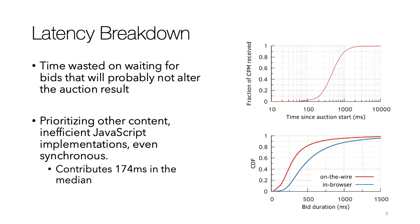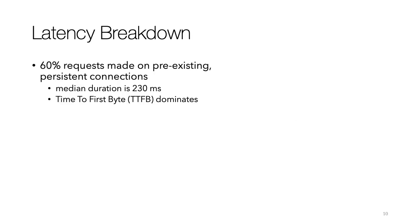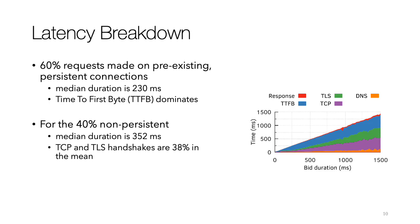Now we focus on the on-the-wire line and break it down further. About 60% of requests to ad exchanges are made on pre-existing persistent connections. For such requests, the median duration is 230 milliseconds, and time to first byte (TTFB) dominates. TTFB is the time between the last byte of the request being sent and the first byte of the response being received. In this case it includes one round trip time and all server-side processing, including the auction at the exchange itself. For the other 40% of requests made on non-persistent connections, the median duration is 352 milliseconds, and 38% of the time is spent on TCP and TLS handshakes.